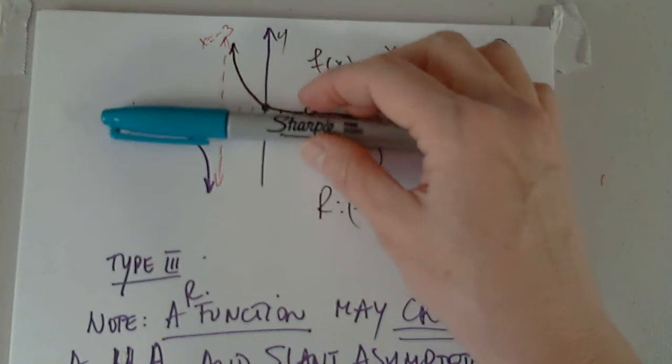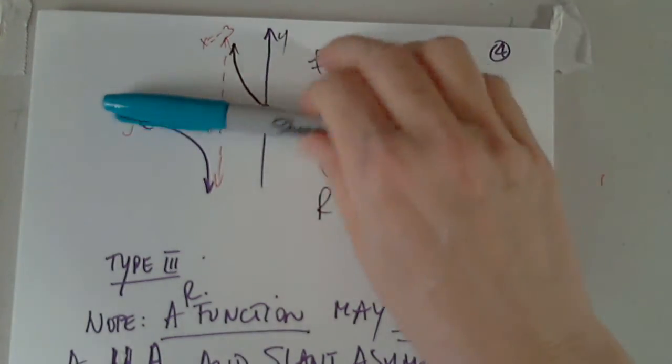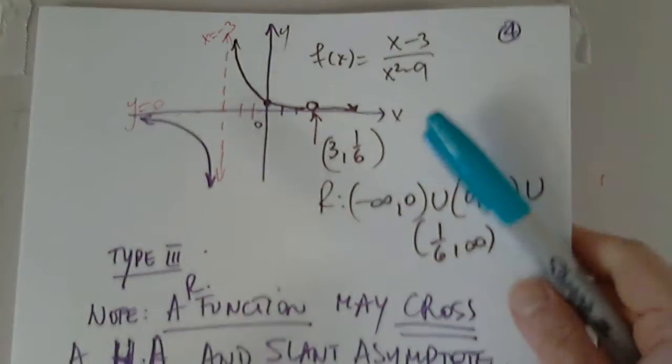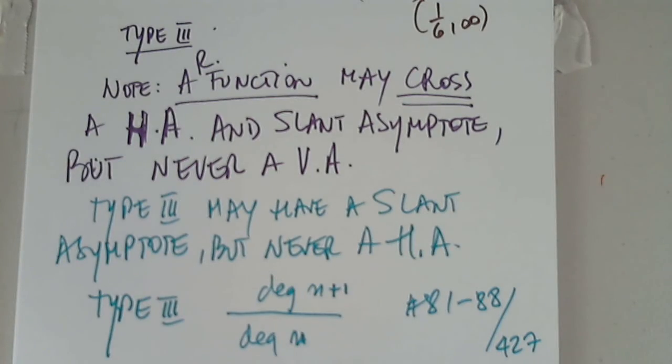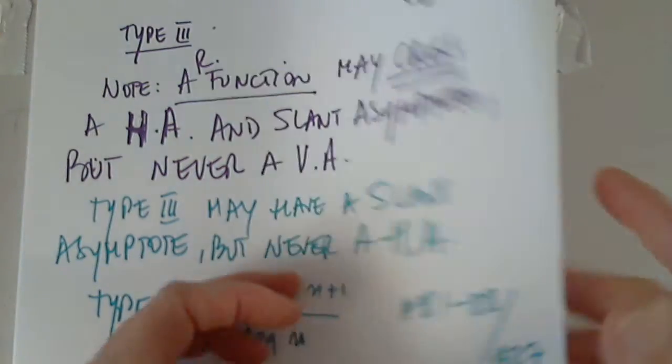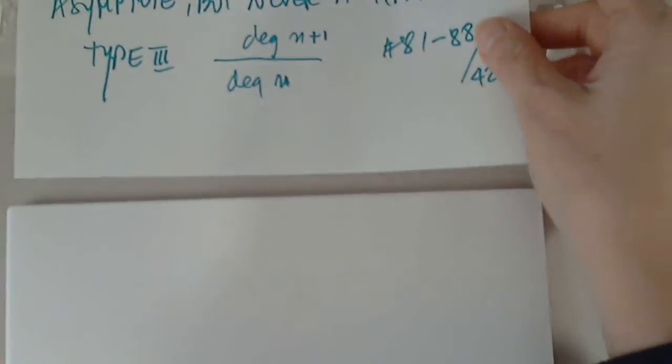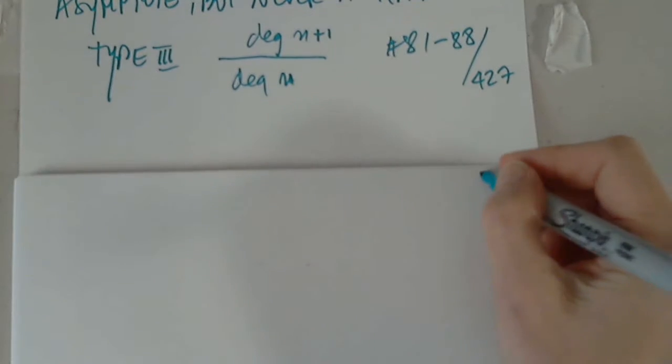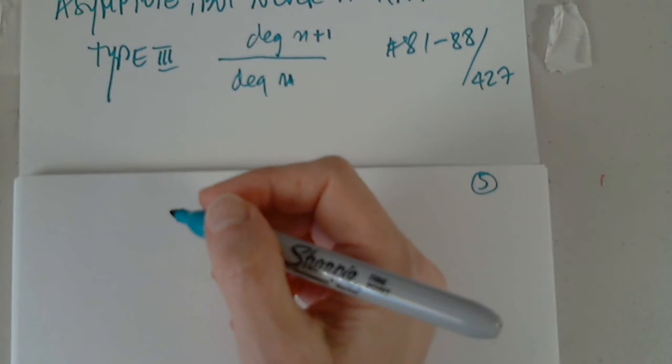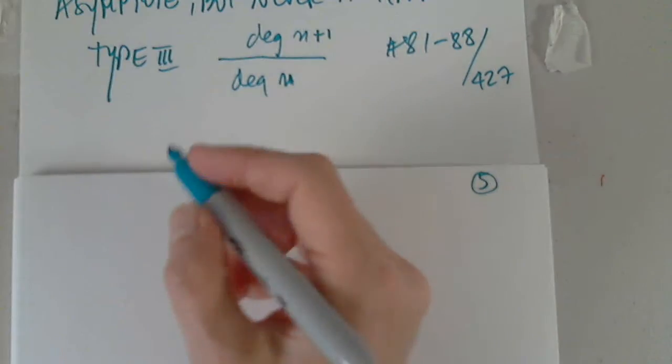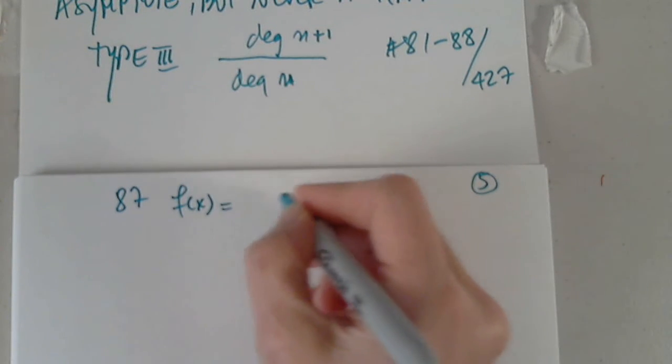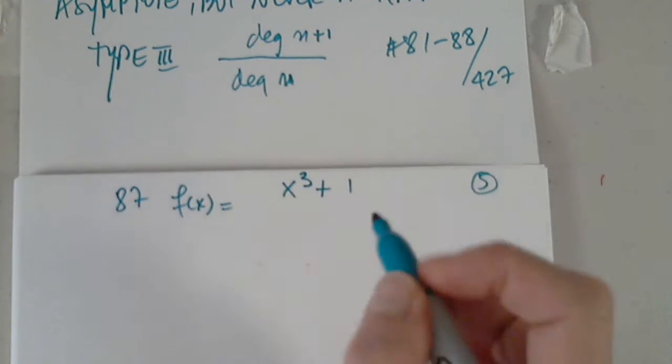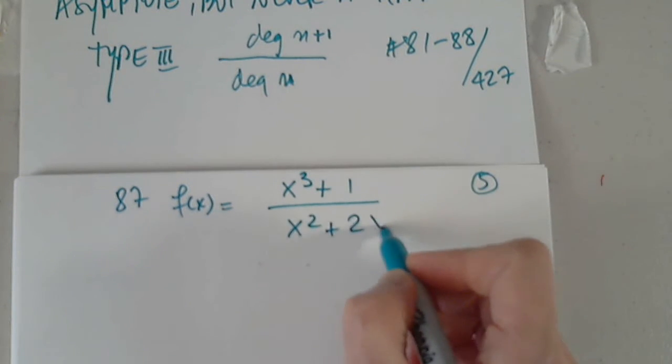Okay, so let's choose a type 3. And let's graph it. 81 through 88. 87 it is. 87. Where are you, 87? Good. Excellent.